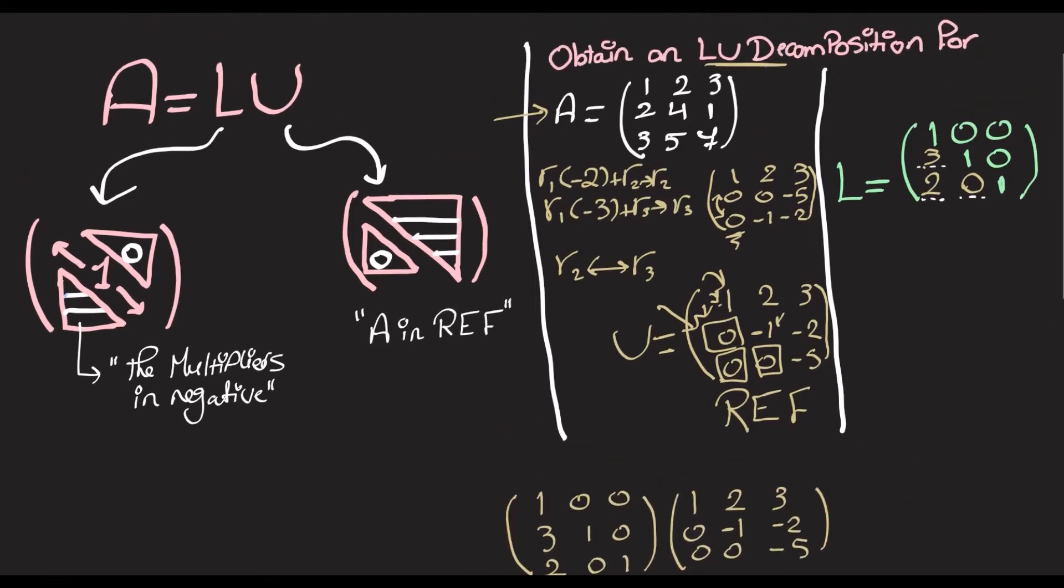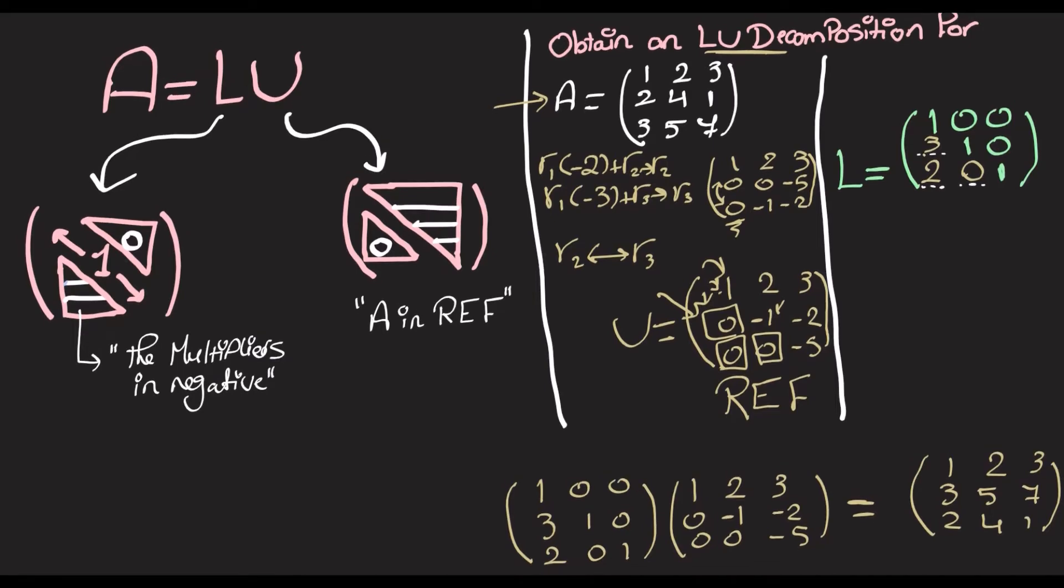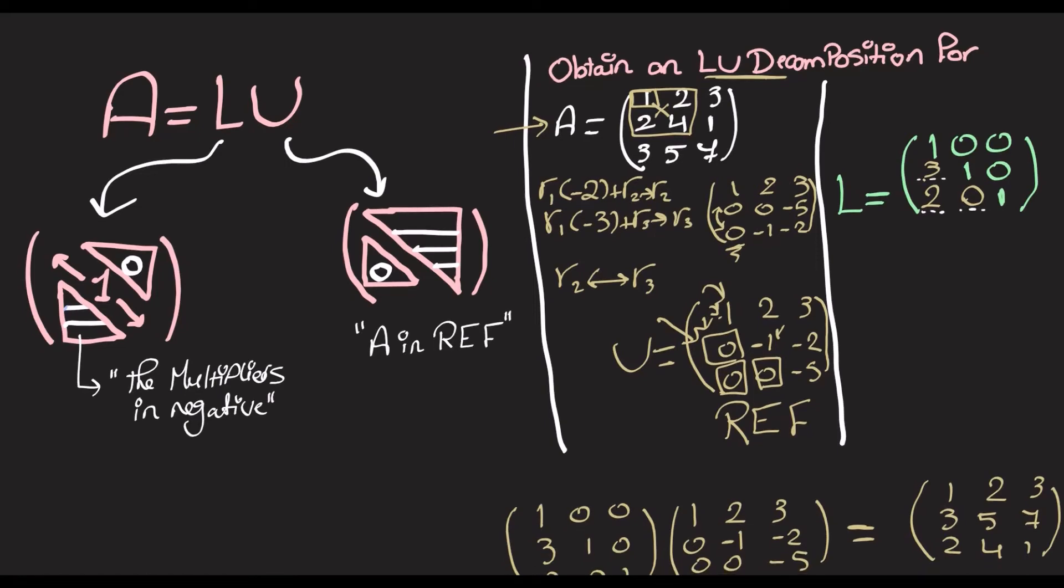But anyway, it is going to yield 1, 2, 3, 3, 5, 7, and 2, 4, 1, which is actually not A. And this does make sense, because A actually doesn't have an LU decomposition. Because if we look at all the leading principal minors, this one is going to be just 1. But this one is 4 minus 2 by 2, which is 0. And this just says that we can't decompose A into just L and U.